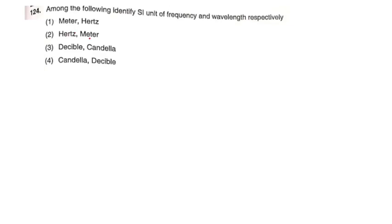Next question: Identify the SI unit of frequency and wavelength respectively. Options: metre/hertz; hertz/metre; decibel/candela; candela/decibel. The SI unit of frequency is hertz, and wavelength is metre. Option number 2 is the correct answer.